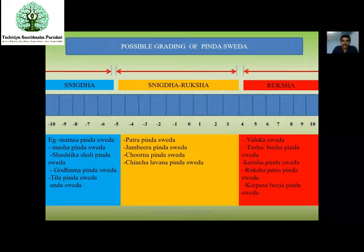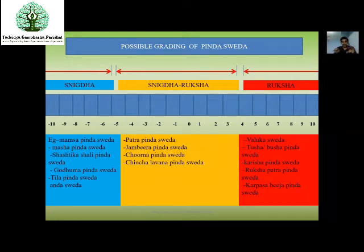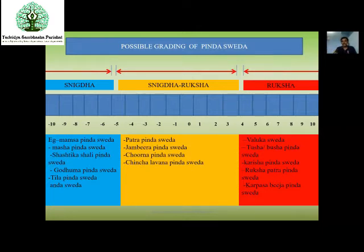Coming to the possible grading of Pinda Sveda — how the grading is there and how we can correlate with the gradings. When categorizing or studying the Sankara Sveda, we can classify into three types: Snigdha Sveda, Ruksha Sveda, and Snigdha Ruksha Sveda. For Snigdha Sveda, the drugs which we are using have a predominance of Snigdha Guna, so that is considered as Snigdha Pinda Sveda. For Ruksha Sveda, the properties mainly have Ruksha Guna, and Snigdha Ruksha Sveda means having both Snigdha and Ruksha Guna.